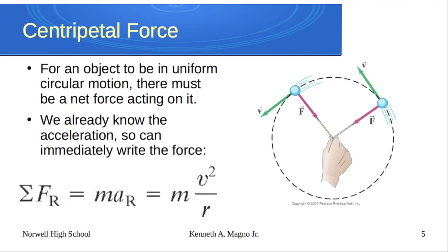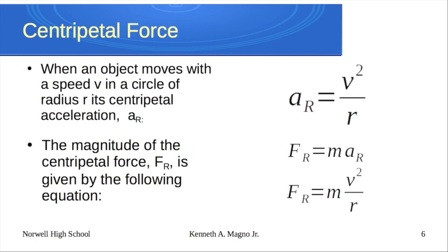We know there has to be a force — the question is what's causing it. The centripetal force could be different things: a string pulling on a ball, friction between tires and road, or gravity if it's a planet going around a star. Any force is mass times acceleration, so F radial equals mass times v²/r. To recap: acceleration radial = v²/r, and force radial = m·v²/r — giving us our centripetal acceleration and centripetal force.